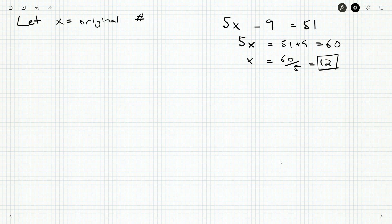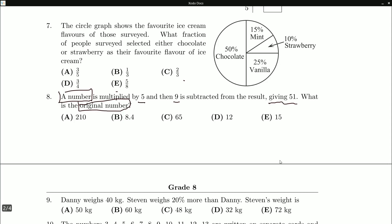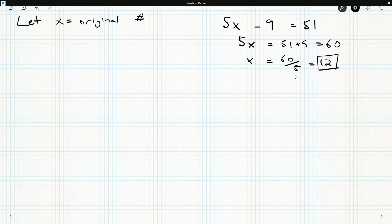12 should be the original number and if we want to double check we could take 12 and go through the steps that they describe. Multiply by five subtract nine but either way we're going to get 12 and that means d is our answer.